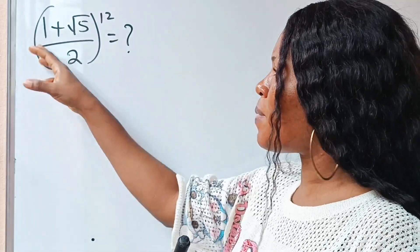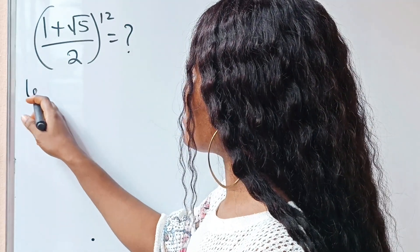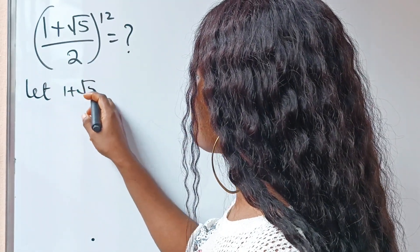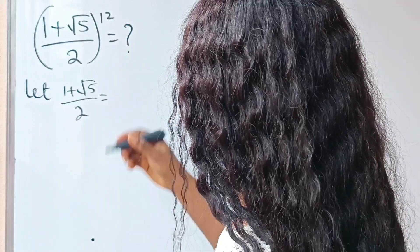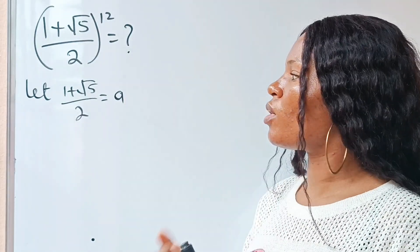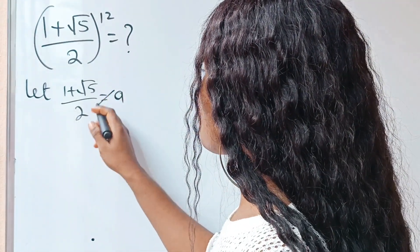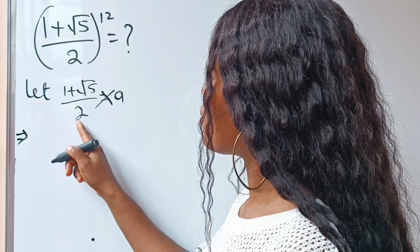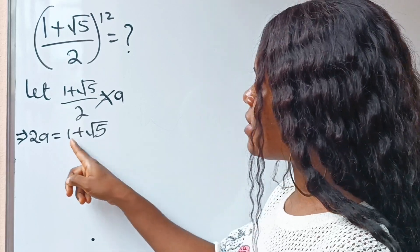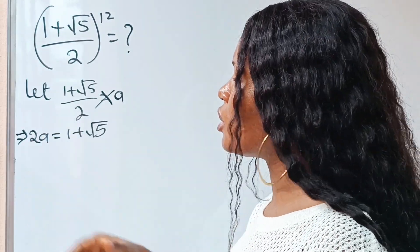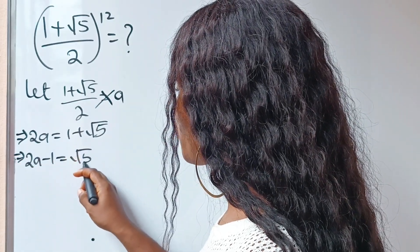First, to simplify it, this particular number inside the bracket — let's call it a. So let a = (1 + √5) / 2. Let's cross multiply. So if we cross multiply, we will have 2a is equal to 1 plus √5. Now, let's take this to the left-hand side, so we have 2a minus 1 is equal to √5.